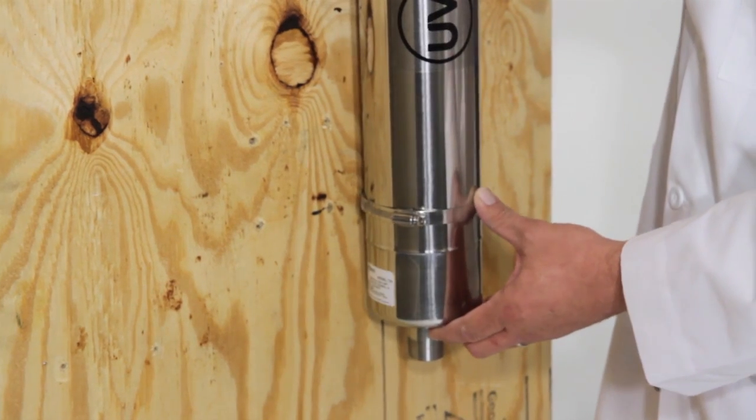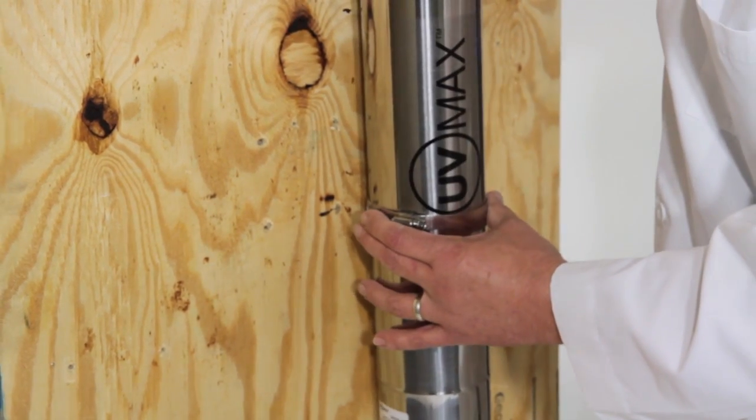Once you have the clamps on there, you're just going to loosen the clamps a little bit and slide your chamber down through the clamps.